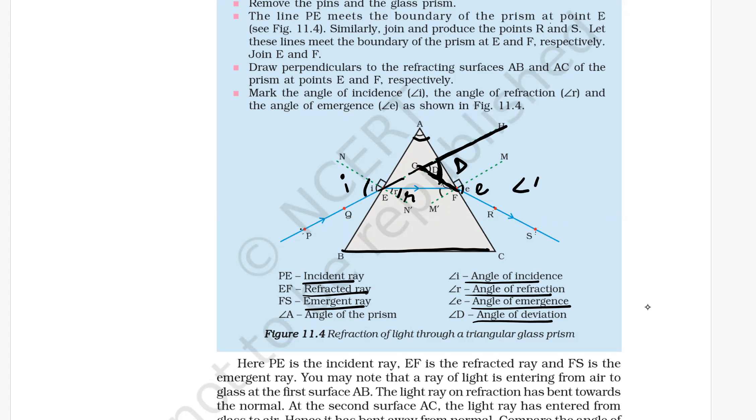The angle of the prism plus the angle of deviation equals the angle of incidence plus the angle of emergence. This relation is true for any prism: A + d = i + e.